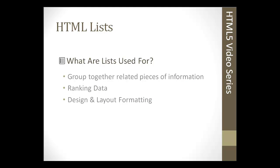So now let's talk about lists. Lists are used to group together related pieces of information, which tables also do. Lists are recommended for smaller amounts of data. If you have hundreds and hundreds of records then a table would definitely be the way to go. If you want to display a list of websites on your site then you would use a list. Lists are also good for ranking data. We have unordered lists and ordered lists, which include numbers — each item would have a number — so it works out well for ranking different types of data.